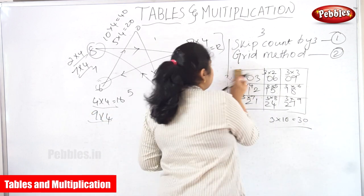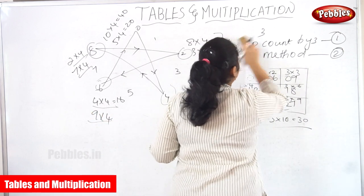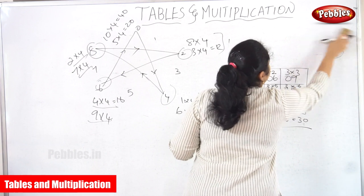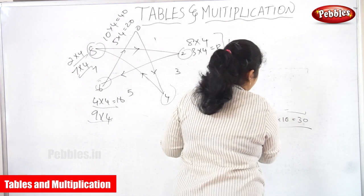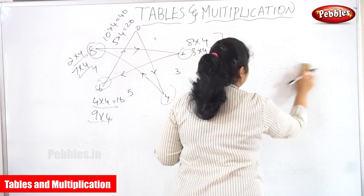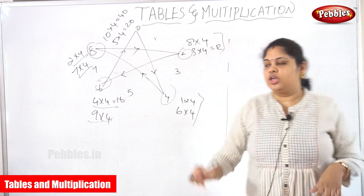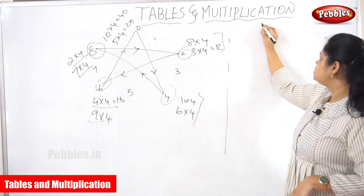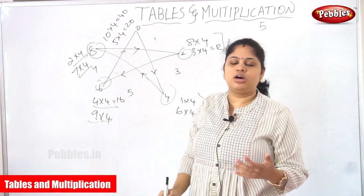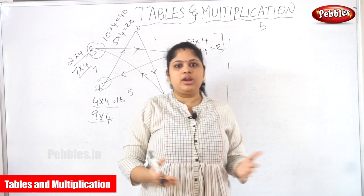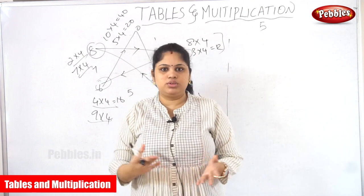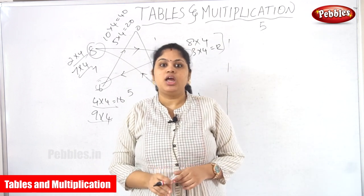We are going to learn about the fifth table. So next one is the fifth table. What are the methods we have used to read the fifth table?